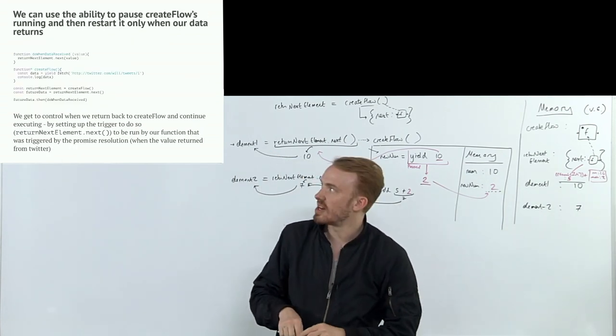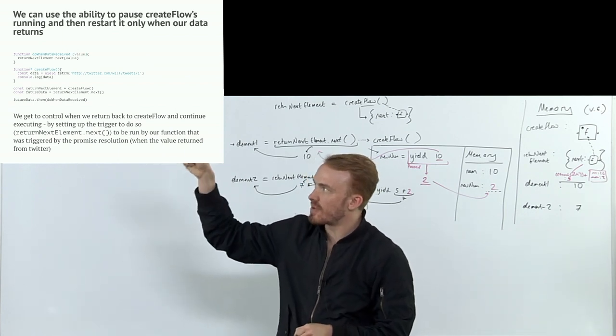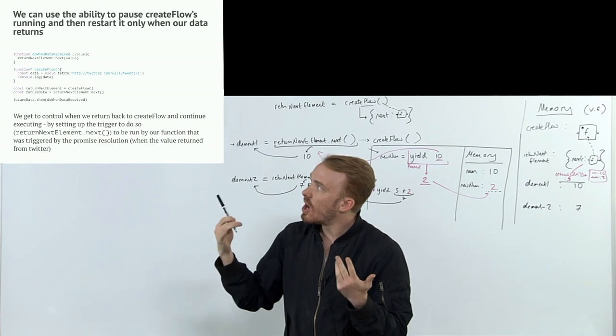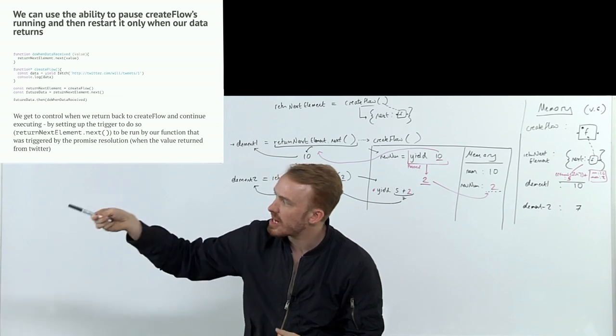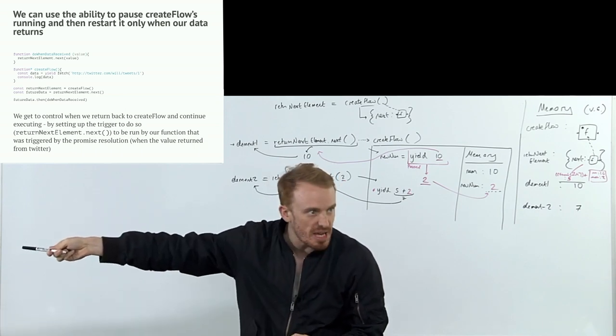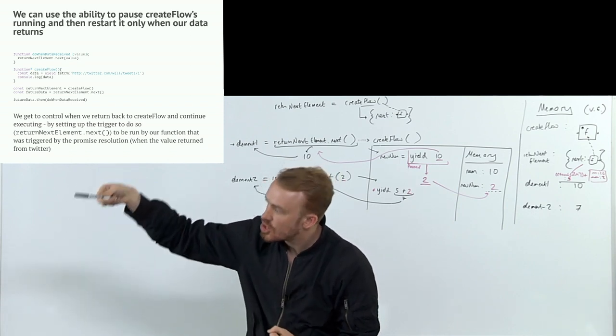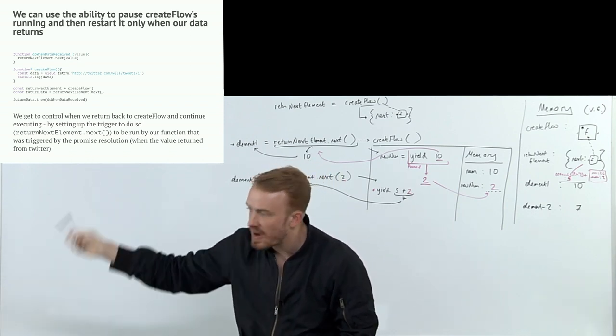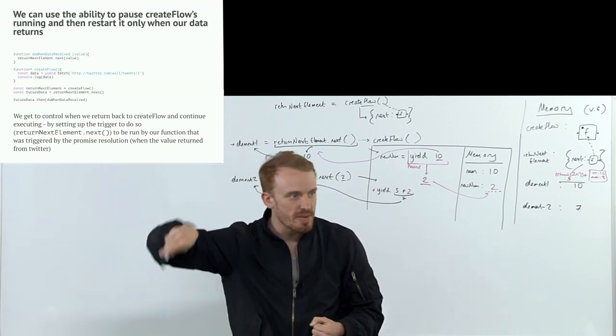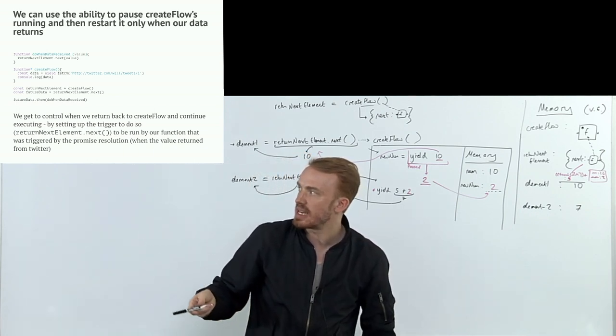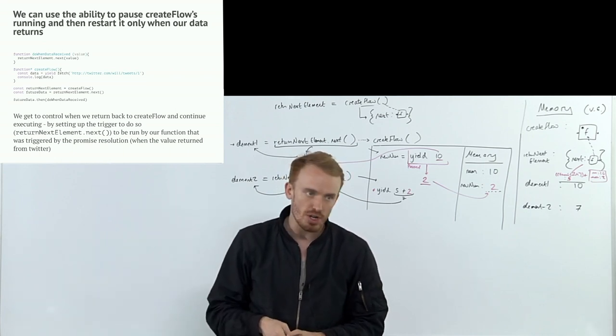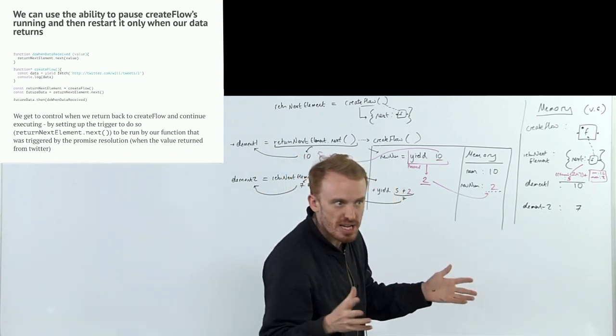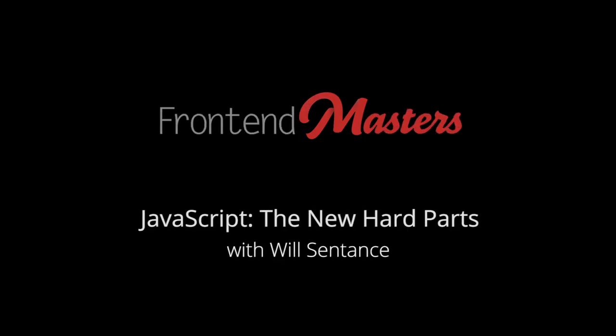And that is exactly what we're going to do here. We can use the ability to pause create flow's running and then restart it only when our data returns. We get to control when we return back to create flow and continue executing by setting up the trigger to do so, which is the next method, to be run by our function that was triggered by the promise's resolution when the value returned from Twitter. It's a little bit loopy back and forwards. It's all going to be automated by async await. We're going to build async await from scratch using this generator function concept, and then we're going to tidy it up, wrap it up using async await, which is going to automate a few of the pieces. This is our final code.